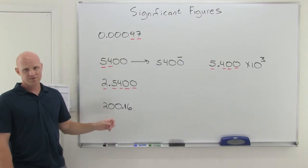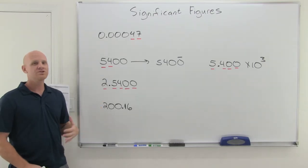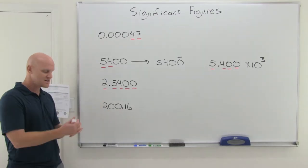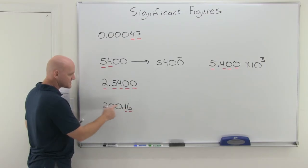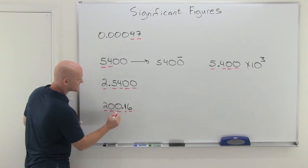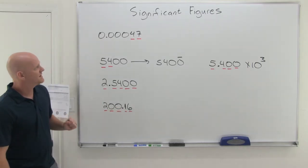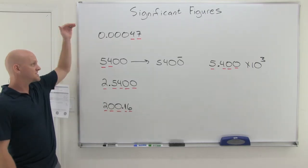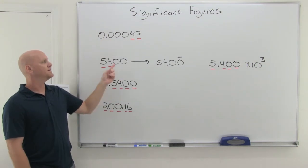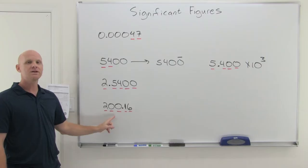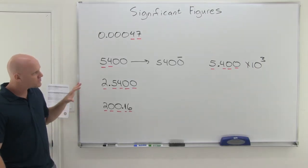The last rule dealing with zeros is that zeros in the middle of the number are always significant — more precisely, zeros that are surrounded by significant figures. So if the two is significant and the one and the six are significant, zeros in between other significant figures are themselves significant. So in this case, we'd have five significant figures in 200.16.